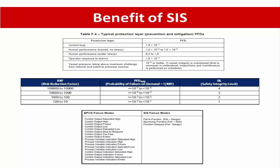The figure below compares failure modes between the BPCS and SIS. BPCS failure modes include several: saturated control output, saturated high, control output high, output frozen, and output low — there are many failure modes for the BPCS. In contrast, the SIS has fewer failure modes: fail-to-function, spurious function, and fail-safe or delayed response. Only three or four failure modes are possible for the SIS.